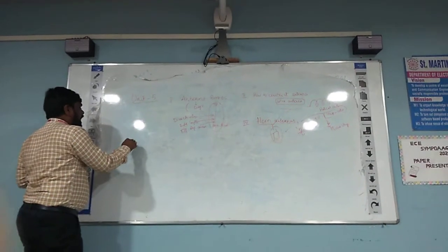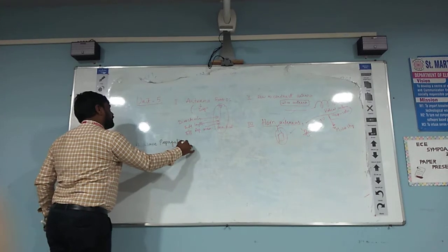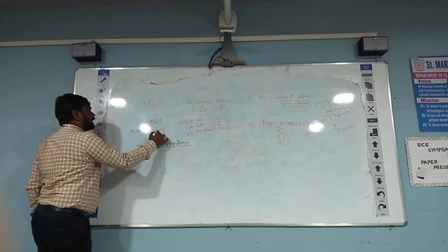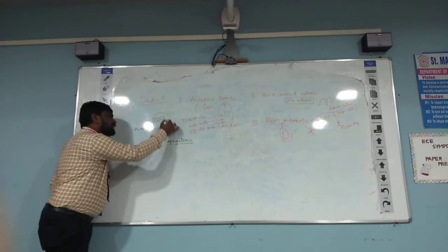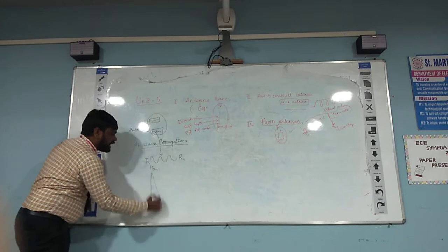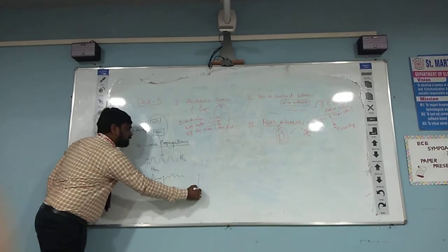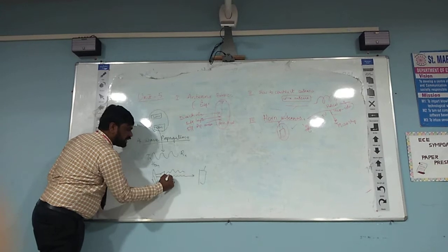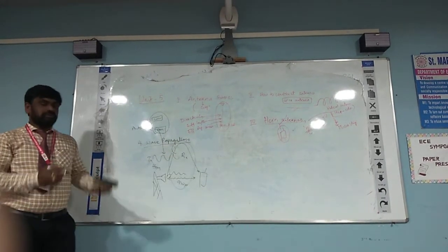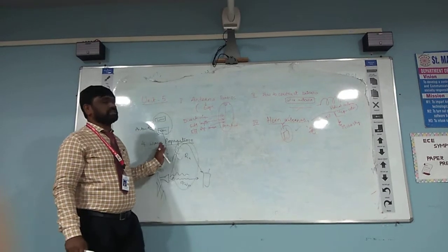Coming to the fourth unit, I have wave propagation. In the first three units, I knew what is an antenna, then types of antennas right from the basic wire antenna to the horn antenna. Now in the fourth unit, how can we use these antennas and how the wave is propagated from transmitter towards the receiver? For example, if I am using a horn antenna, where my antenna cover is there, and how the wave is being propagated — either using ground wave propagation, or going to the ionosphere layer and coming back. Different types of propagations are discussed in the fourth unit: ground wave propagation, sky wave propagation, and ionospheric plane propagation.